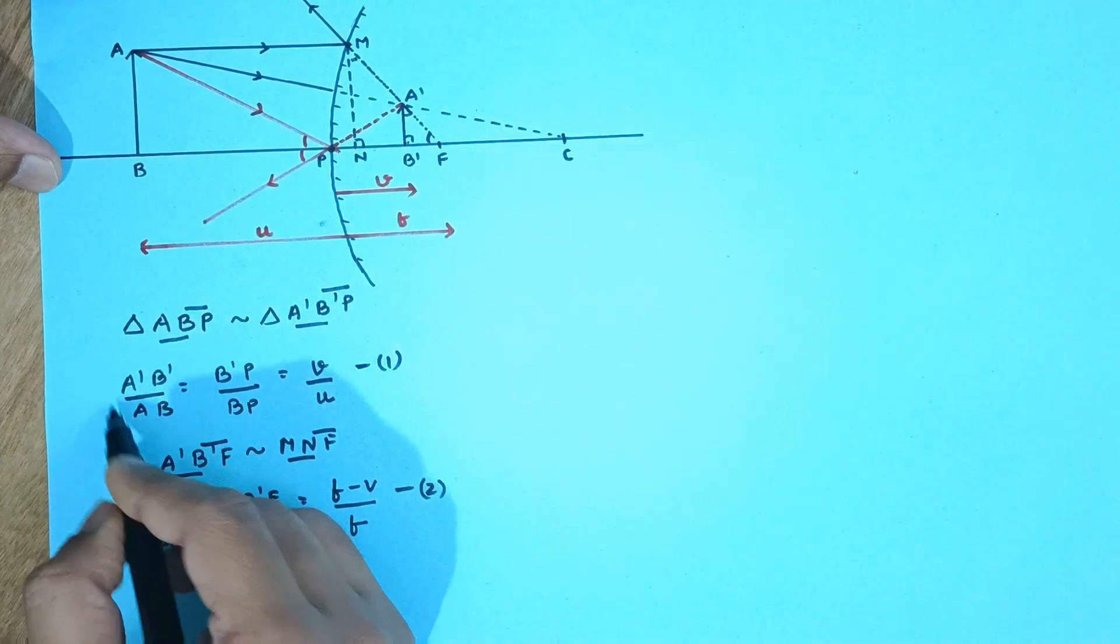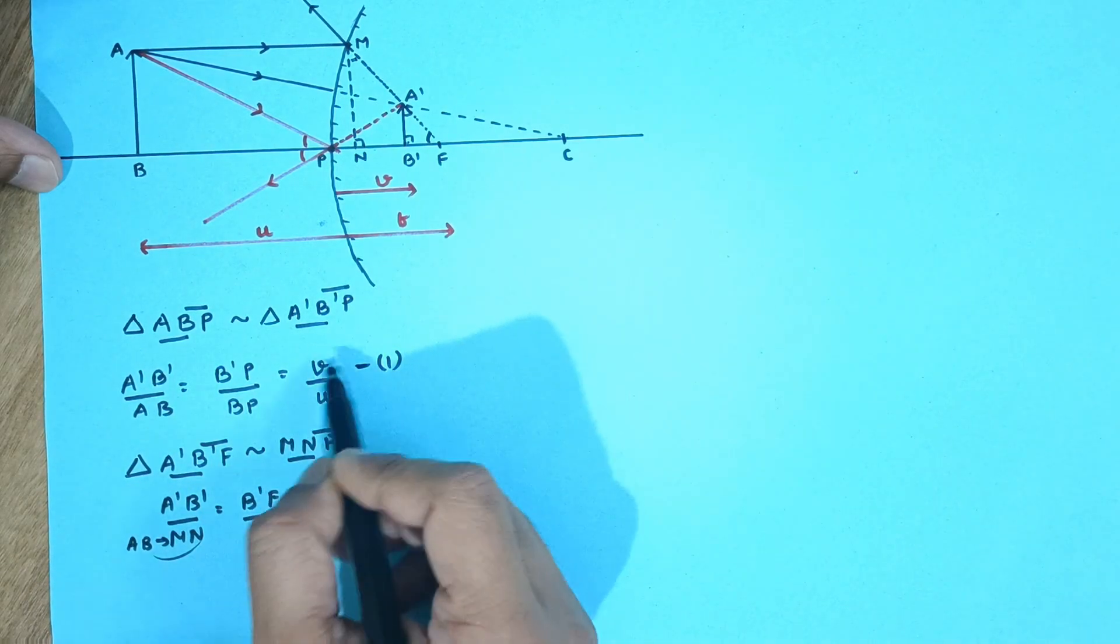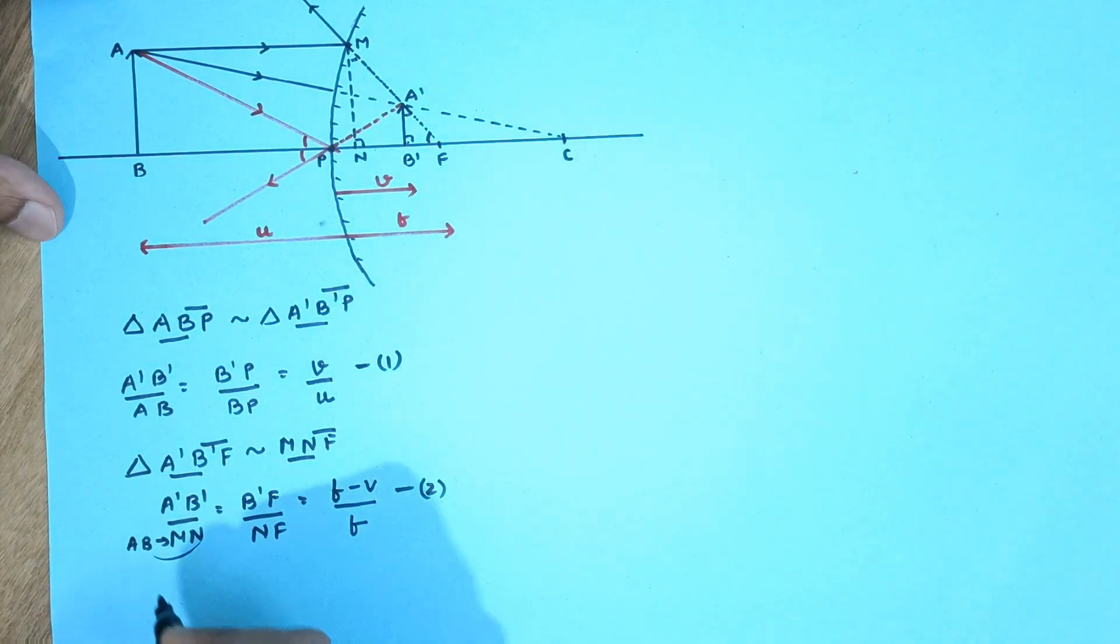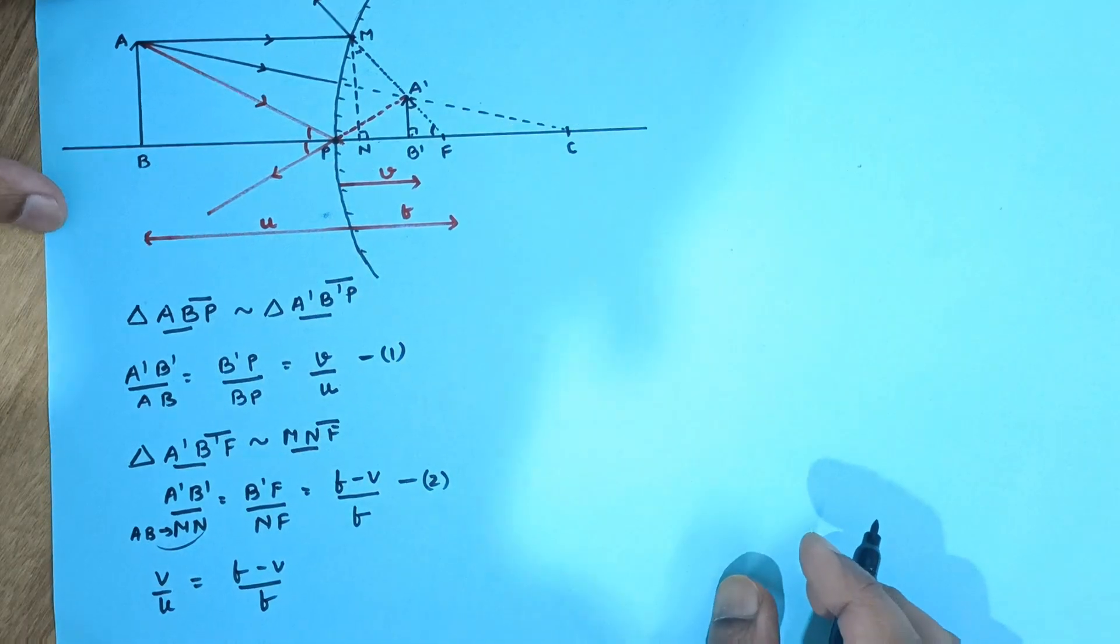So this ratio and this ratio becomes the same. So this ratio and this ratio must be the same. So V by U must be equal to F minus V upon F.